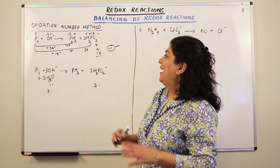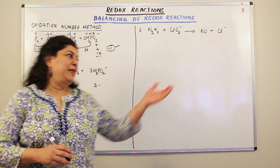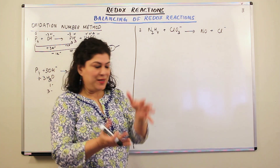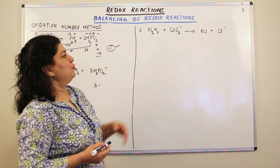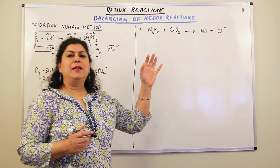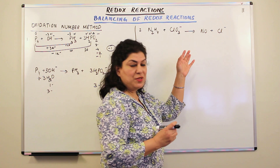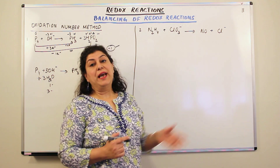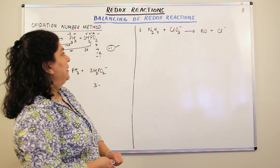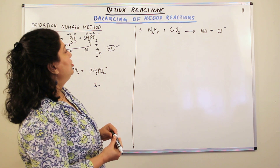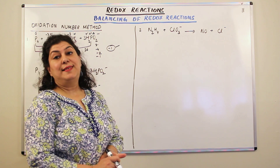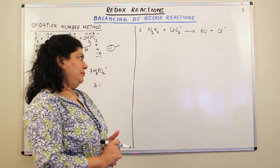I hope that helped. Now I have one more problem to give the video a little more substance. This is taken from your textbook exercise, perhaps question 19, and this reaction is also taking place in basic medium. We need to solve it by the oxidation number method. The equation is: N2H4 plus ClO3 negative gives NO plus Cl negative.